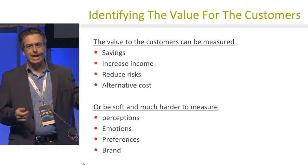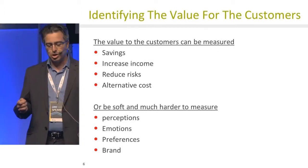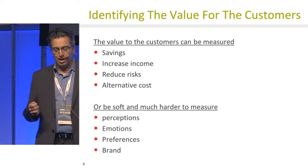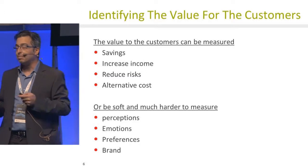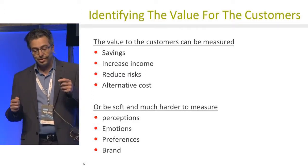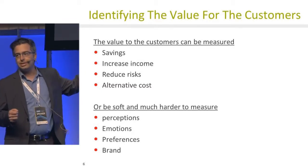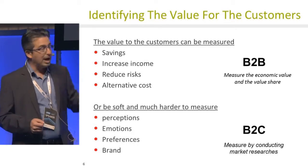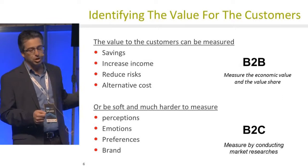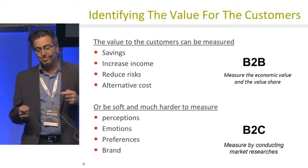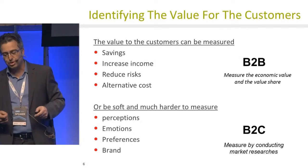There are different types of values. Some are strict and easy to measure, like savings or increased income. Others are very soft, like perceptions, emotions, and preferences. Easy-to-measure values can still require market research methods. Generally, you find clearer values in businesses and softer values among consumers.